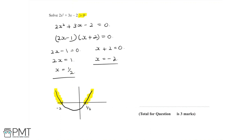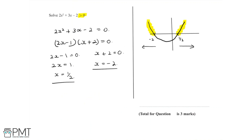We can see that to satisfy this inequality, we need any point greater than a half and any point less than minus 2. Since the points where 2x squared plus 3x minus 2 is greater than zero are where x is less than minus 2 and x is greater than a half, we can write: x is less than minus 2 and x is greater than a half.